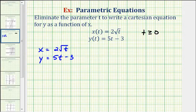So looking at this first equation, to solve this for t, the first step would be to divide both sides by two. So we have x divided by two equals the square root of t. And now we would square both sides of the equation to solve for t. So now we have t equals x squared over four.